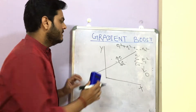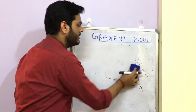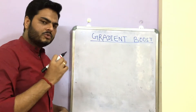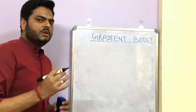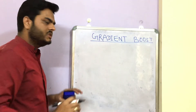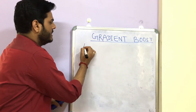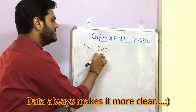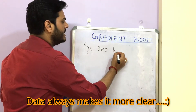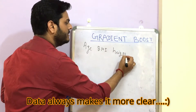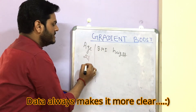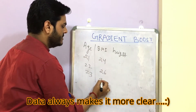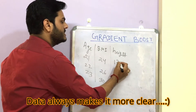The same concept is being used in gradient boost. I will take a very simple data example to make you understand how gradient boost works. Let's say I take the age of a person and the BMI of a person — age might be 21, 22, 23, BMI might be 24, 26, 30.